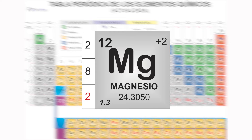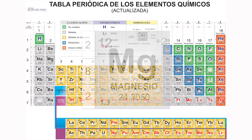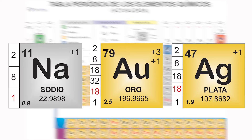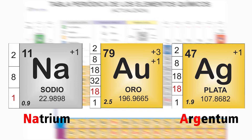Pero para otros se usó la segunda, la cuarta, la última, etc. Pero hay otros como la plata, el oro y el sodio, que pareciera que su símbolo no tiene nada que ver con su nombre. Esto es porque su símbolo fue asignado con base en su nombre antiguo en idioma latín. En este caso, NA es por Natrium. Natrium es el nombre antiguo de sodio. AG es por Argentum. Y AU es por Aurum. Te invito a que investigues los que más te llamen la atención.